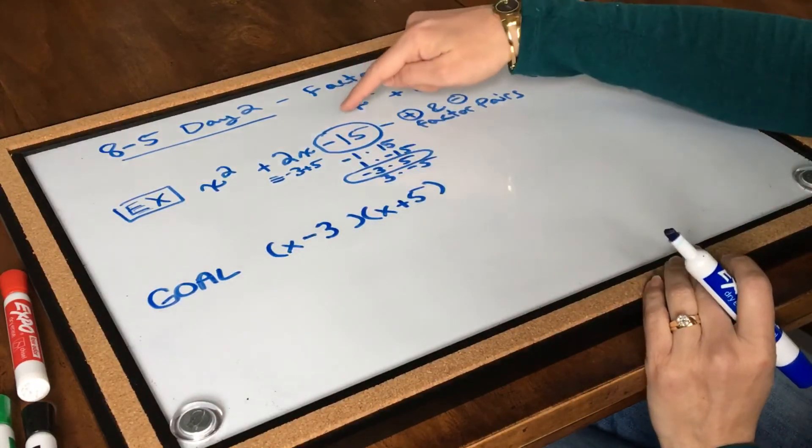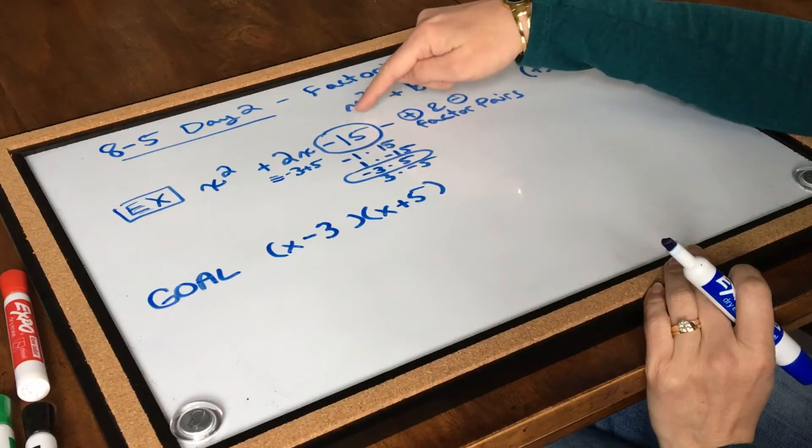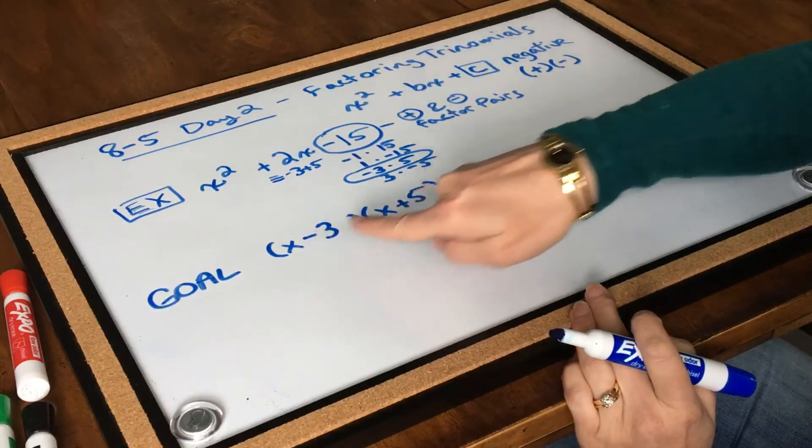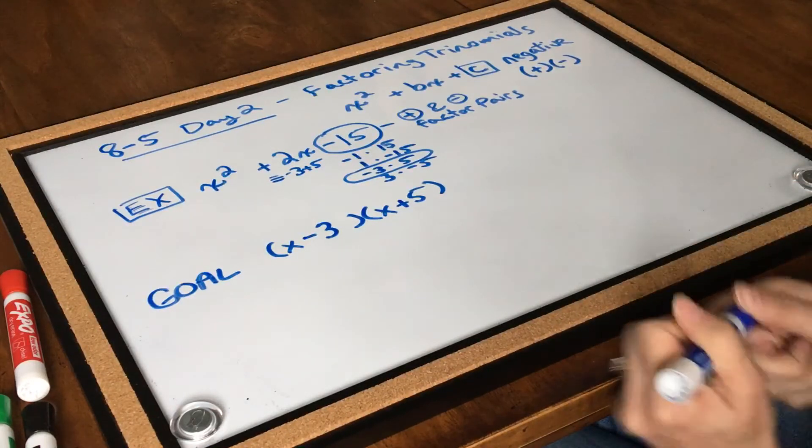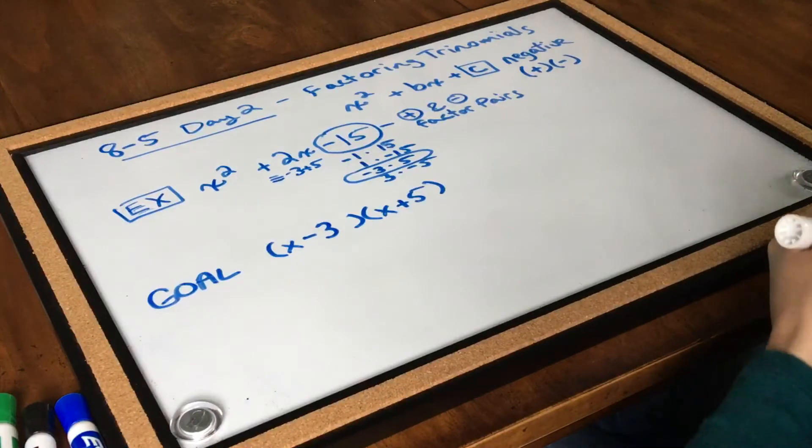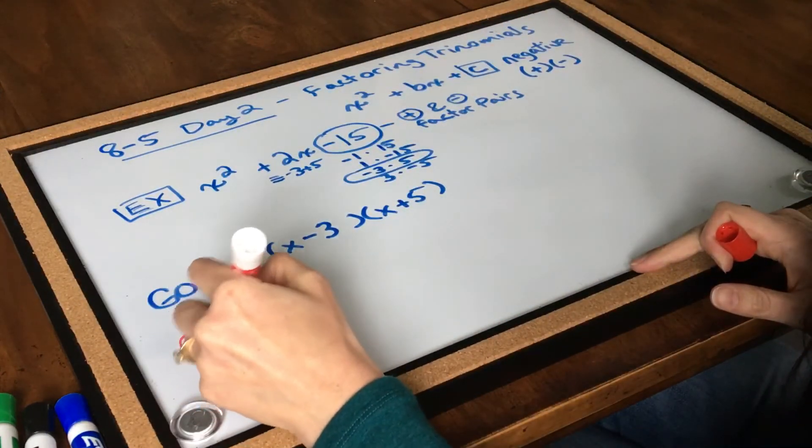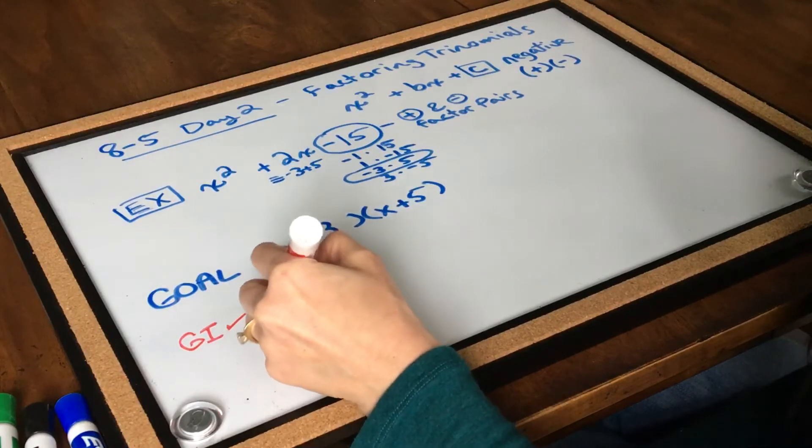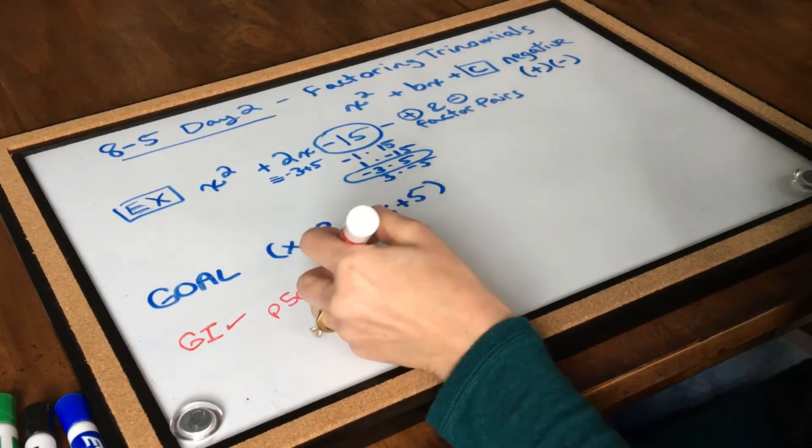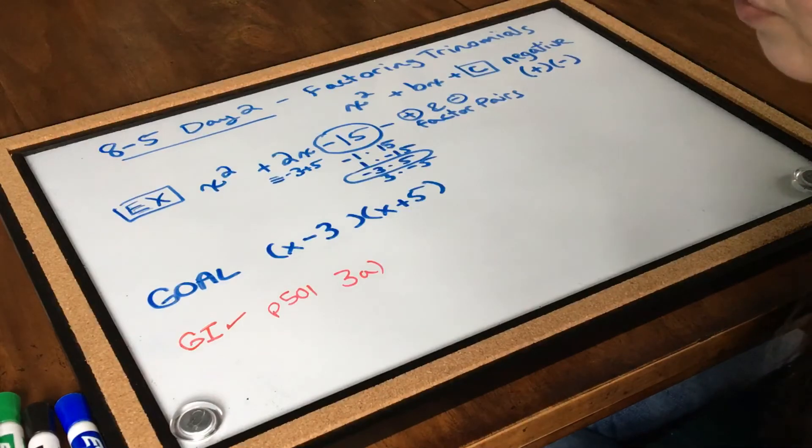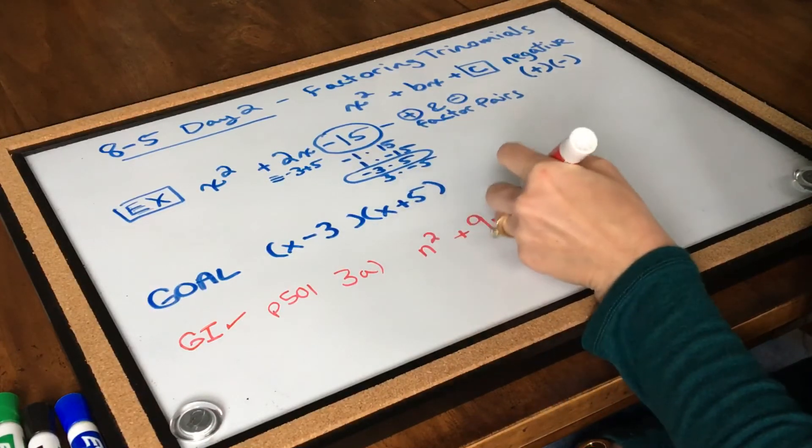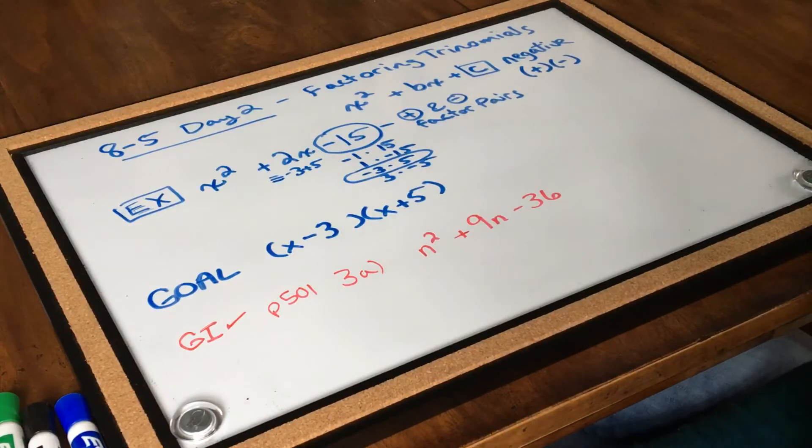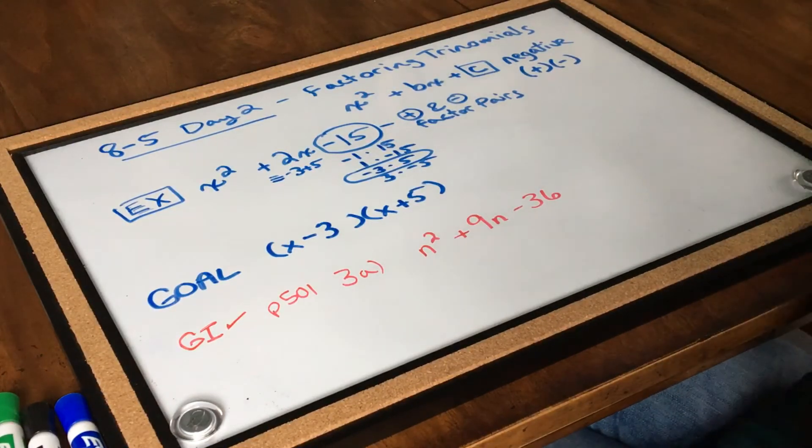So just make sure you keep a lookout, and remember, whenever that last term is negative, you're going to end up with one negative and one positive in the factor pairs. I think you guys are ready for the gotta check. So our gotta check is on page 501, and we're doing gotta check 3A. It is n squared plus 9n minus 36. Pause the video and give this one a shot, and we'll come back when you're ready.